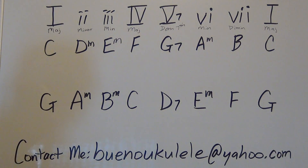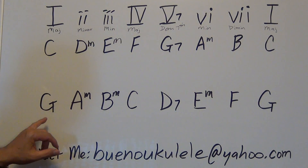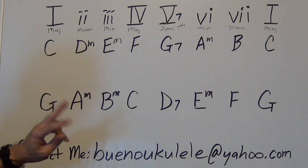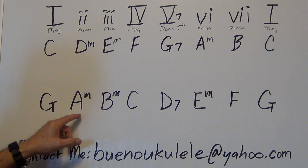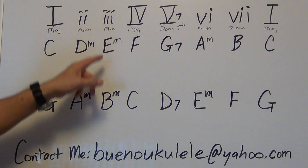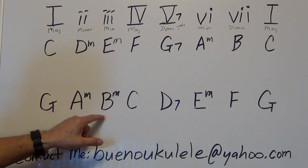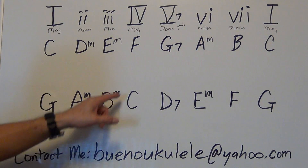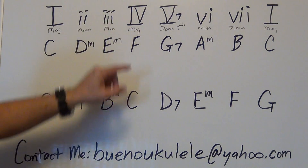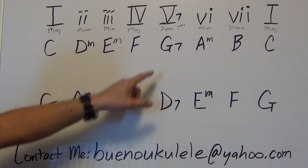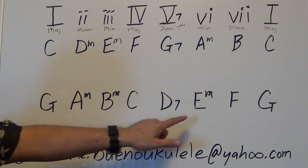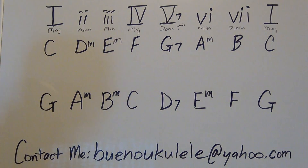In the key of G, the family of chords: G is your I chord. The II chord is A minor. The III chord is B minor. The IV chord is C major — big Roman numeral so it's major. The V7 chord is D7. The VI chord is E minor.